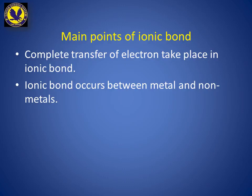The metal has an extra electron. This is why metal is a good conductor of electricity, because electric current is a movement of electrons. The non-metal, on the other hand, needs electrons. The non-metal is not a good conductor of electricity because it lacks free electrons for movement.